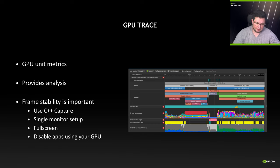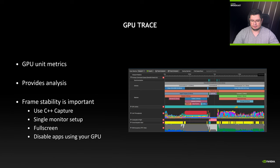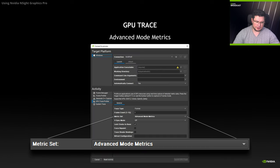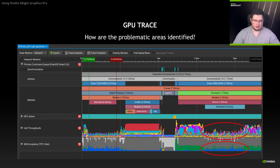Before you capture a GPU trace, it is very important to eliminate as much background noise on the GPU produced by other applications as possible. Also, disable Windows Desktop Manager on all except one monitor and run your application in full screen while capturing. Before capturing, ensure to set the metric set to Advanced Mode metrics.